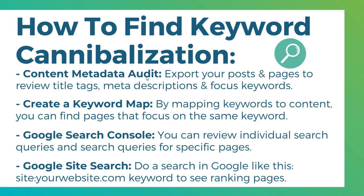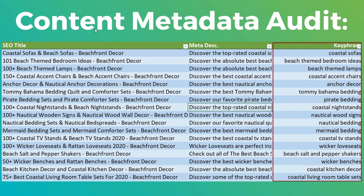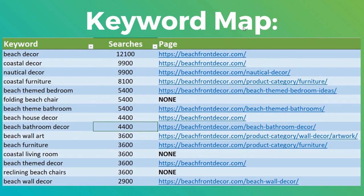The content metadata audit is going to look something like this — these are the SEO titles for the different pages and posts on my website, and these are the key phrases I'm focused on. As I create more and more content, I want to make sure I set my main short-tail key phrase. If I find two pages focused on 'coastal sofas,' I know I need to make changes — maybe merge them or pick the preferred page using the canonical tag. A keyword content map shows my top keywords and the page each keyword is mapped to. Where I see 'none,' that's an opportunity to improve. And if I find three or four pages based around 'beach theme bedroom,' I'd just merge them all into one.